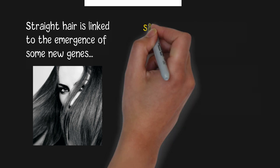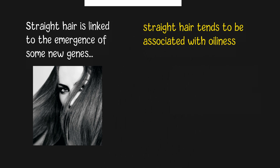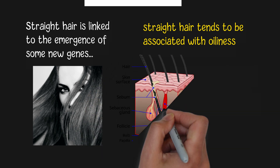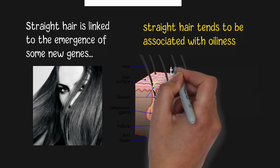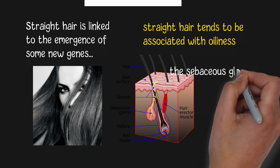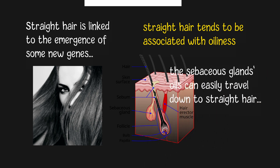Straight hair has certain advantages for hair health. One notable fact is that straight hair tends to be associated with oiliness, while individuals with curly hair do not have it. Hair without adequate oil can become fragile and brittle. One explanation for that difference is that, compared with curly hair, the sebaceous gland oils, which are secreted into the hair shaft, can easily travel down straight hair.